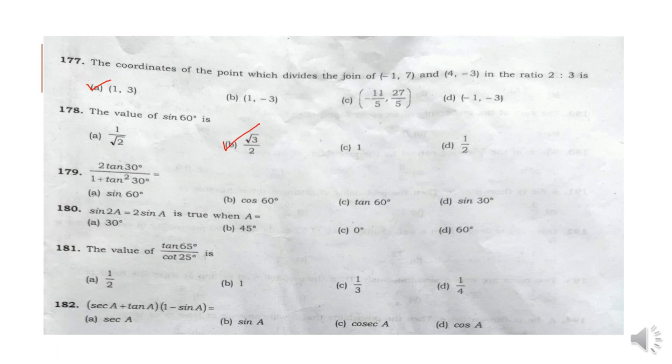Question 179: 2 tan 30 degrees divided by 1 plus tan squared 30 degrees is equal to root 3 by 2, which equals sin 60 degrees.